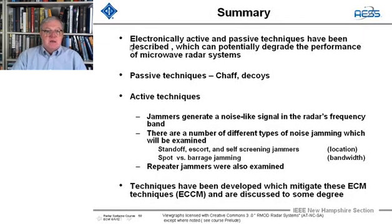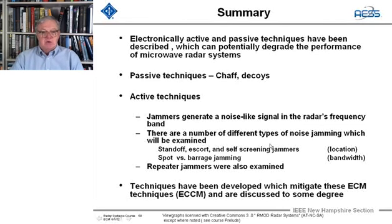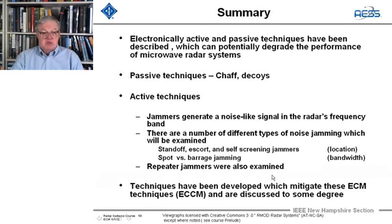In summary, electronically active and passive techniques have been described that can potentially degrade the performance of microwave radar systems, and we can mitigate that degradation. We've looked at passive techniques — chaff and decoys — active techniques such as jammers, and different types of noise jamming: standoff, escort, and self-screening jammers, as well as spot versus barrage jamming and repeater jammer techniques. Countermeasures — ECCM — have also been developed to mitigate ECM.